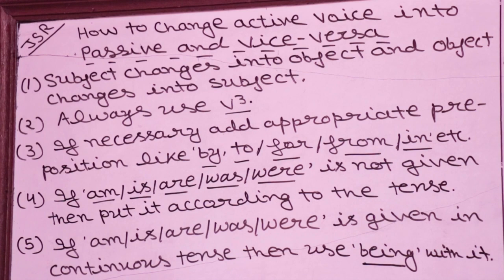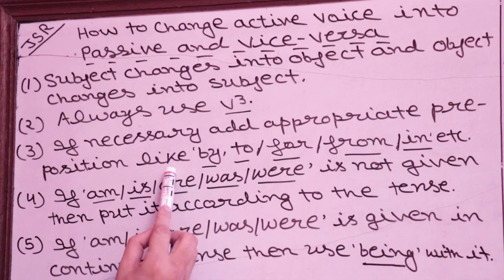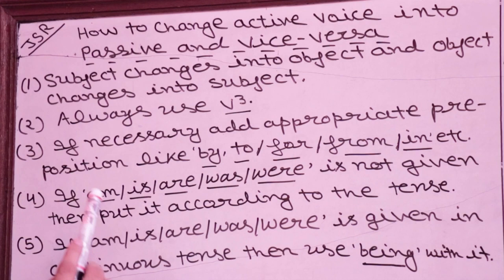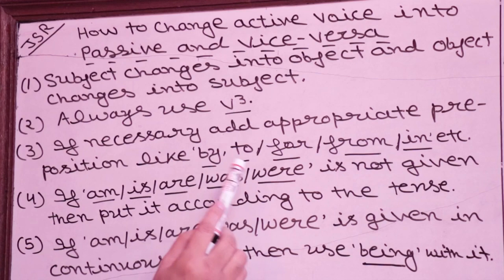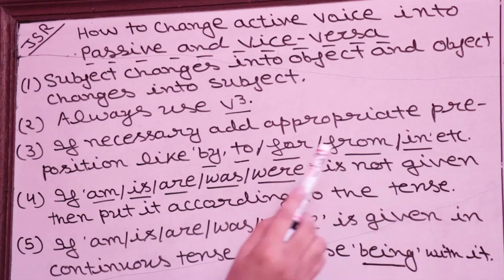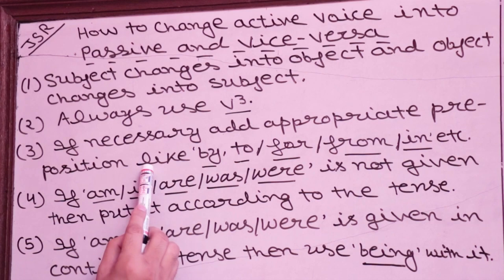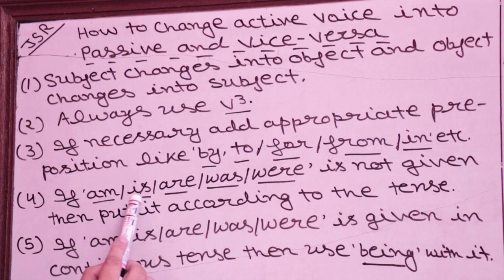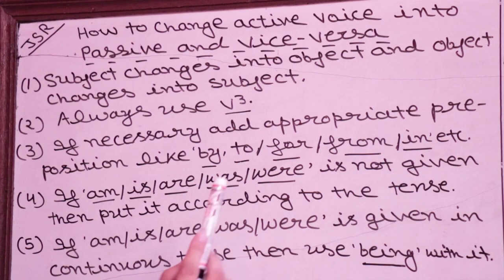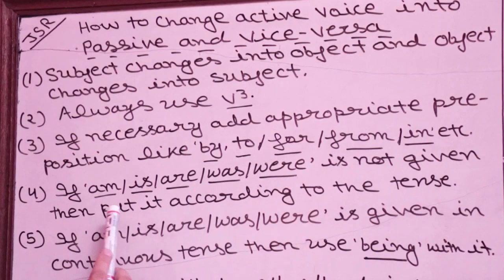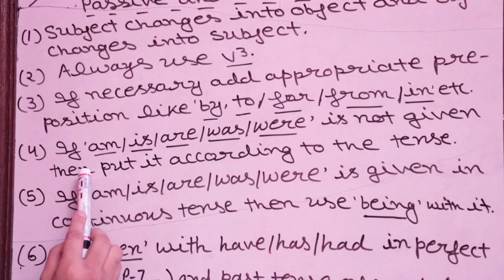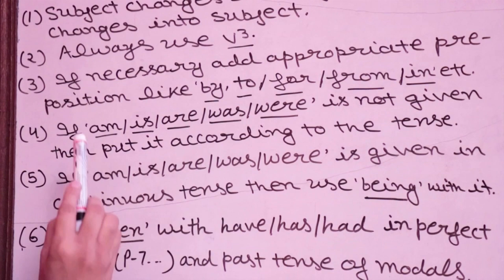Third rule: If necessary, add appropriate prepositions like by, to, for, from, in, with, within, etc. You need good knowledge of English grammar for this. Fourth rule: If am, is, are, was, or were is not given, then put it according to the tense. For present indefinite use am/is/are; for past indefinite use was/were.